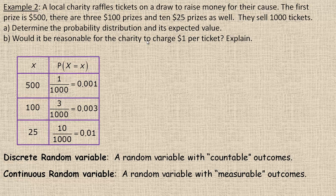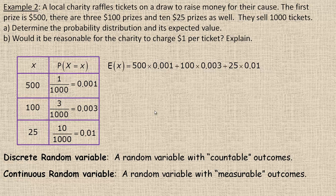So now we're going to calculate this expected value next. We'll go 500 times 0.001 plus 100 times 0.003 plus 25 times 0.01. So each outcome times its probability. So if you multiply 500 by 0.001, that is 50 cents. 100 times 0.003 is 30 cents, 0.30, because this is actually money. And 25 times 0.01 is 25 cents. So if you add the three of those up, you get $1.05.